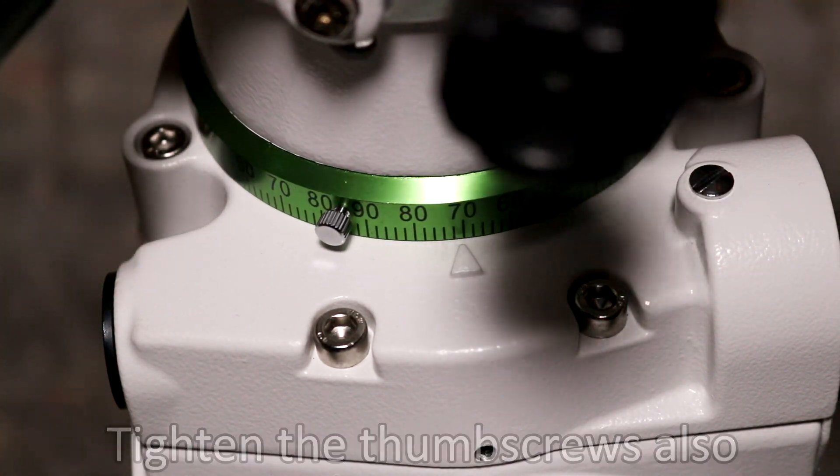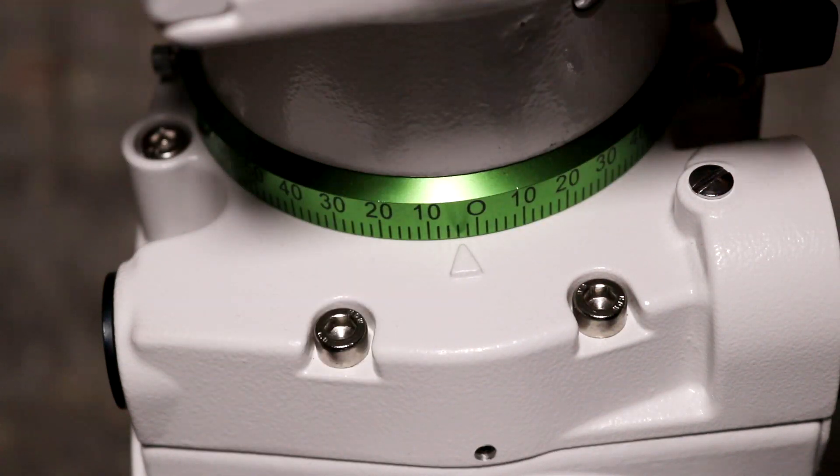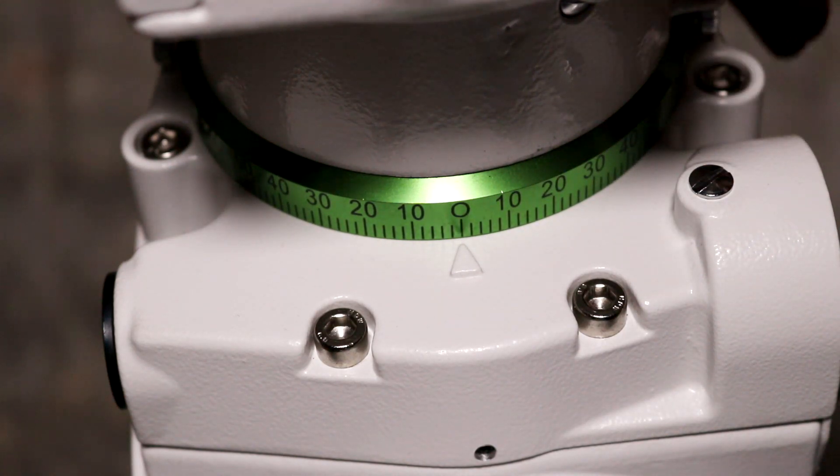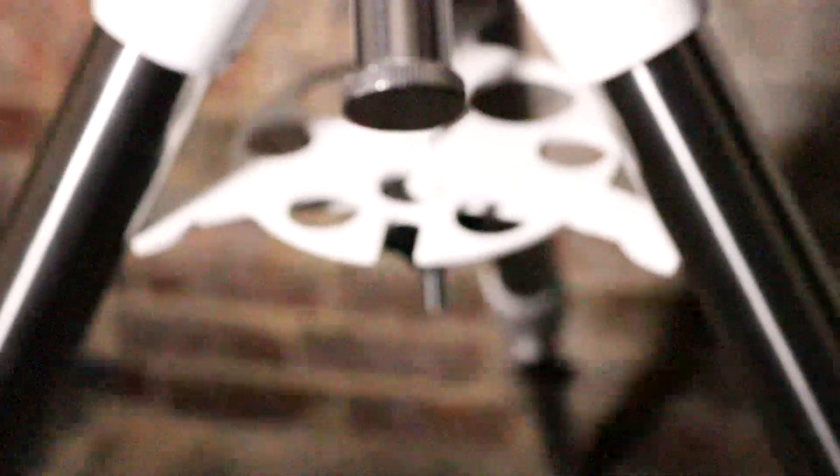And then once again we want to undo the declination clutch, and you could use the hand control and move this slowly in declination, or I'm just going to do it by hand. You want to move it until now you're at zero, and then lock the declination clutch. With the declination axis at zero degrees like this, the mount is now completely in the equatorial home position.